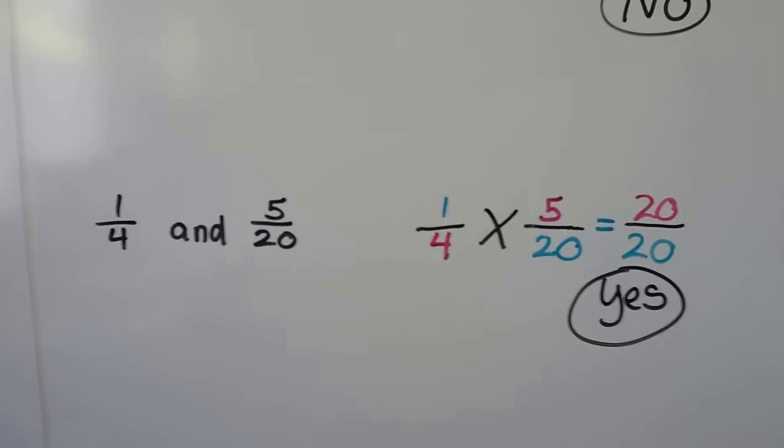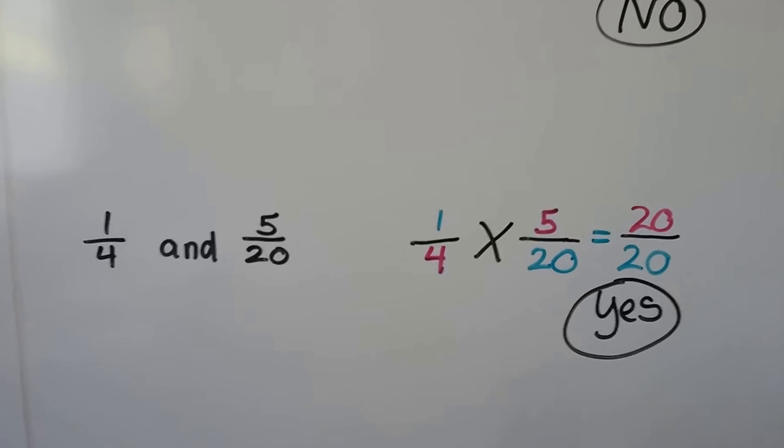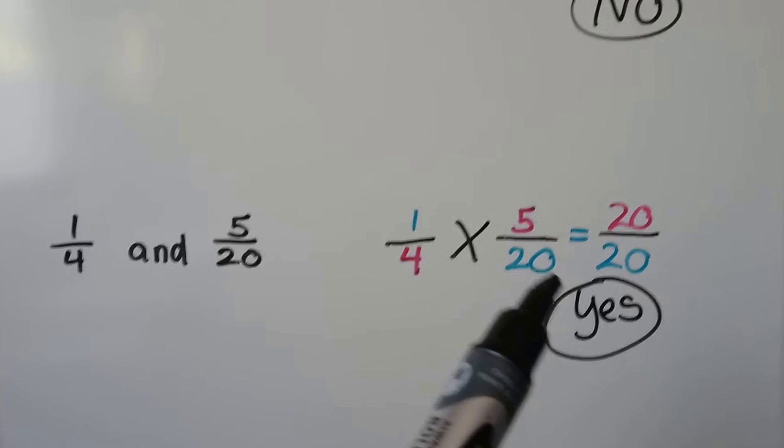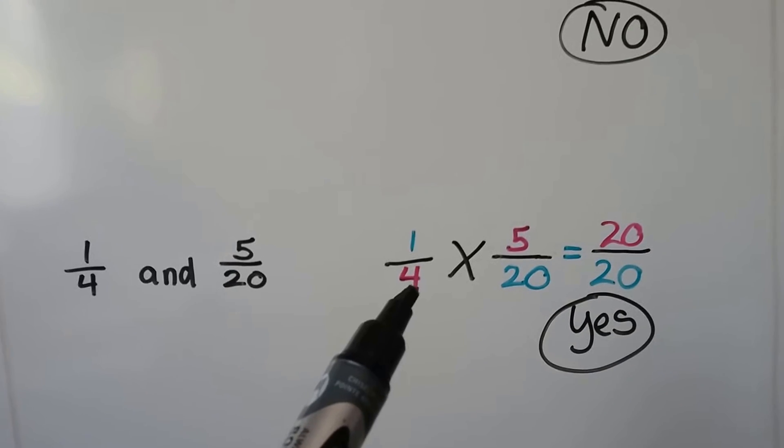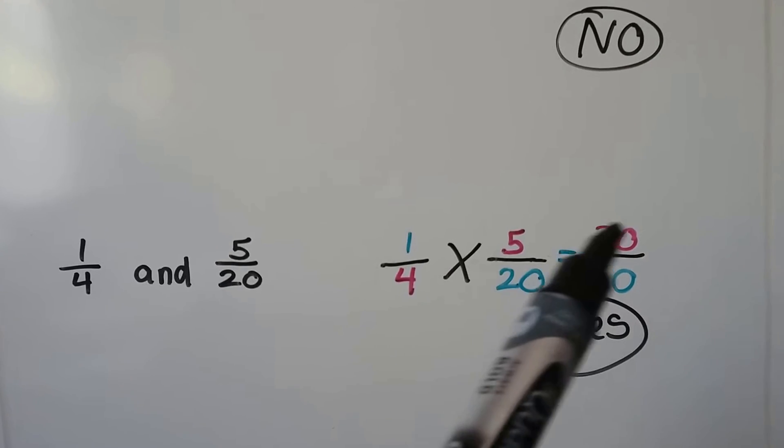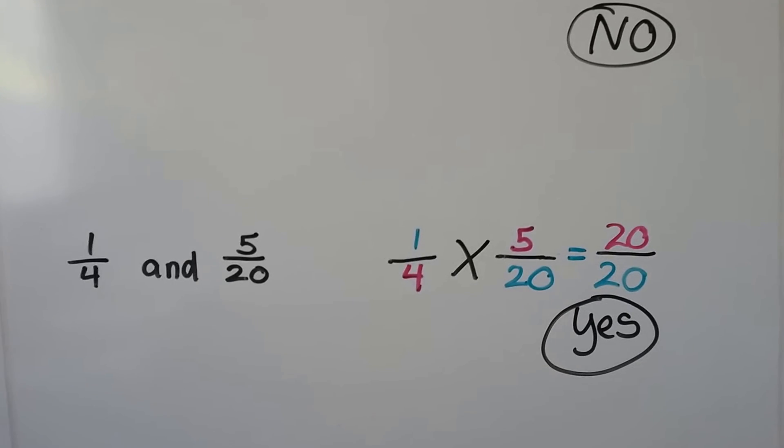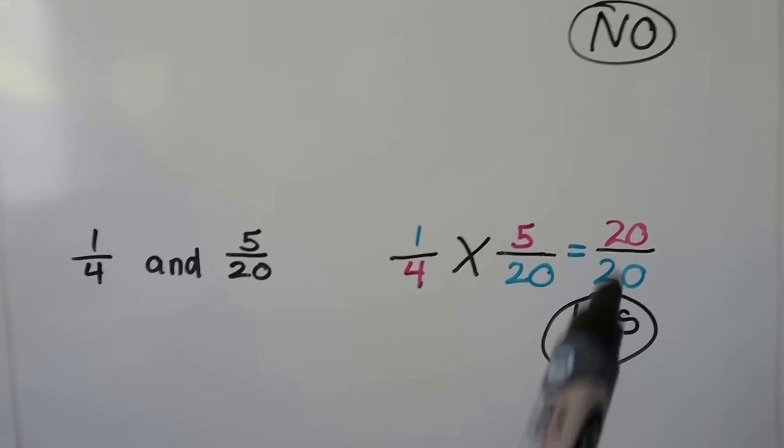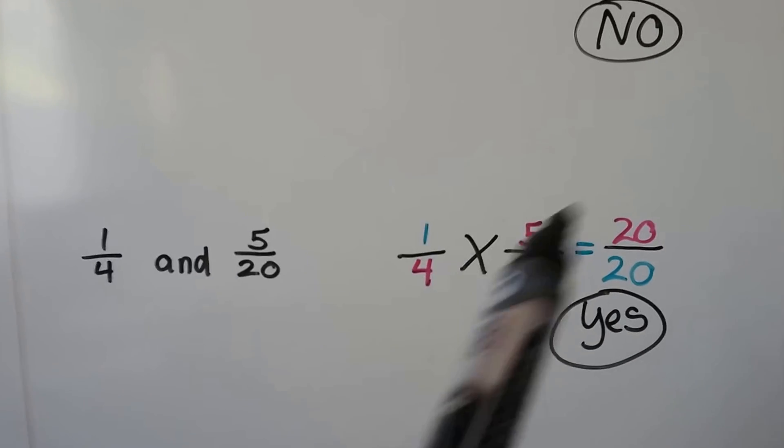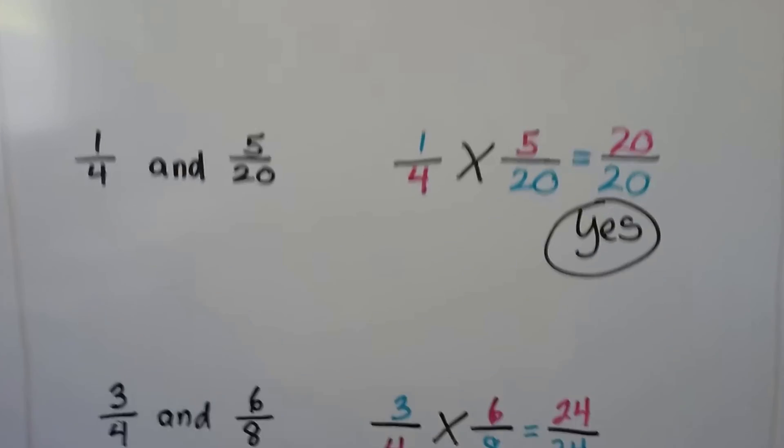We have one-fourth and five-twentieths. We multiply the one to the denominator twenty and get twenty. We multiply the four to the numerator five and get twenty. So yes, one-fourth and five-twentieths are equivalent fractions because we got the same product when we did the cross products.